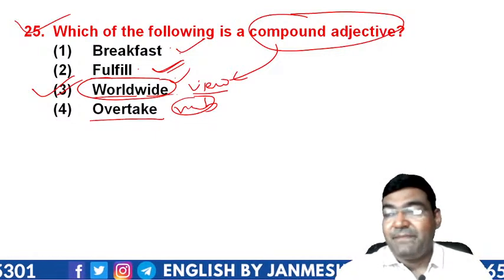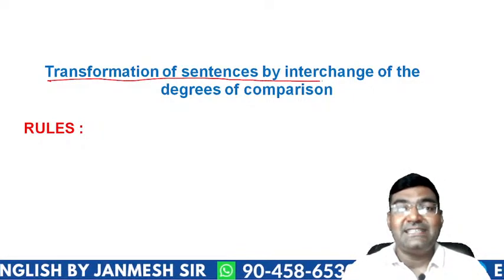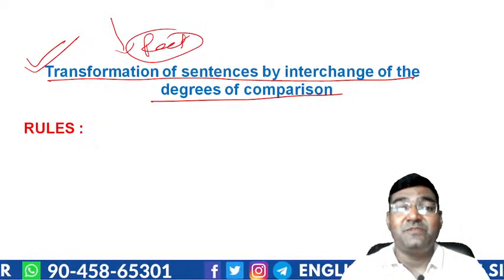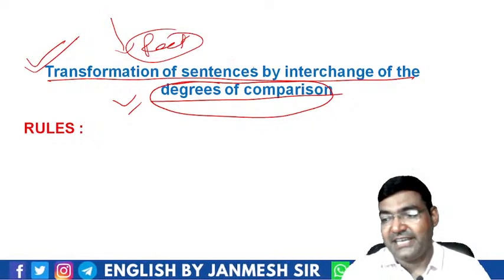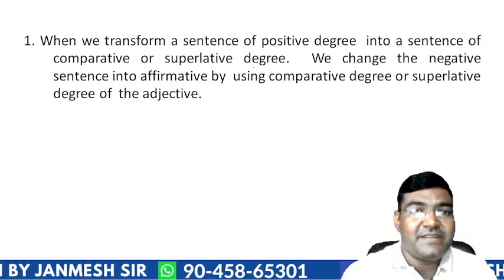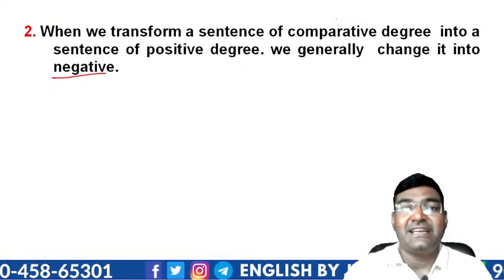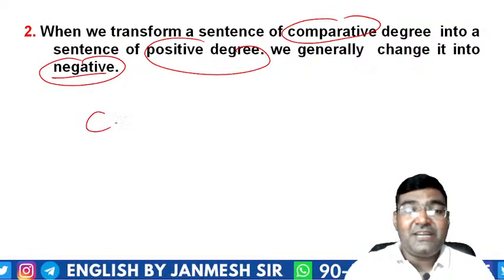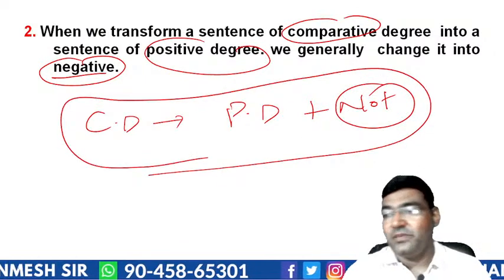Now we move to degrees of comparison — this topic appears in all exams and especially in REET. The key rule: when changing from comparative degree to positive degree, we use a negative construction. So comparative degree transforms into a negative positive sentence. This is an important point to remember.